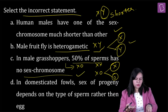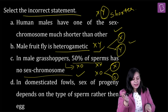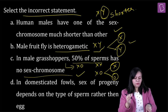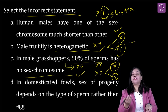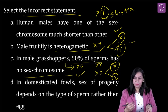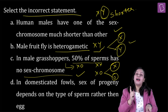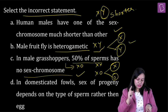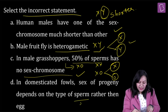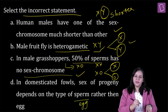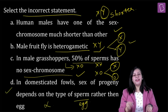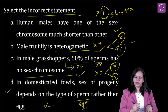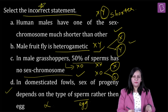So obviously option D should be the right answer. In domesticated fowls, sex of progeny depends on the type of sperm rather than egg. Domesticated fowls are birds, and in birds females are heterogametic and males are homogametic. So it should actually depend upon the type of egg rather than the sperm. That is where the statement becomes incorrect, making this option the right answer since we were looking for the incorrect statement.